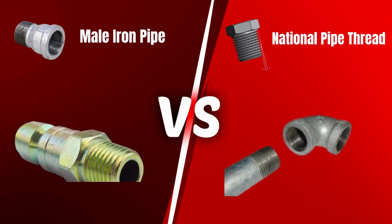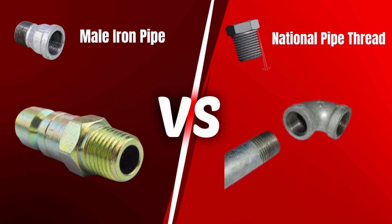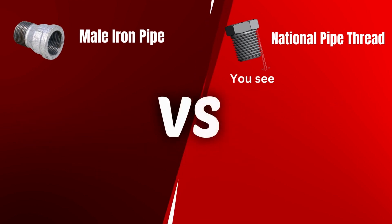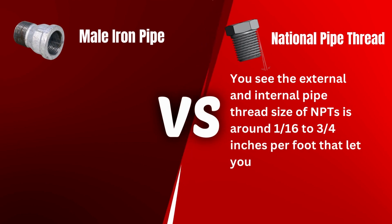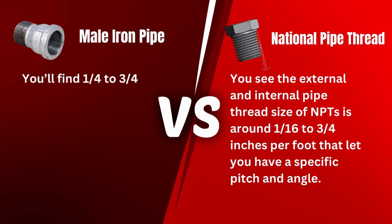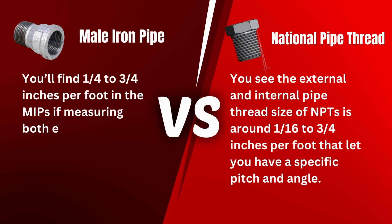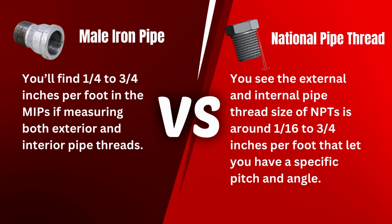In addition, the NPT and MIP thread sizing are different if you look closely. The external and internal pipe thread size of NPTs is around 1/16 to 3/4 inches per foot, giving a specific pitch and angle. You'll find 1/4 to 3/4 inches per foot in MIPs when measuring both exterior and interior pipe threads.